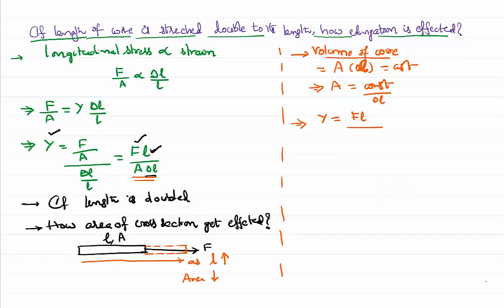Volume is nothing but area into length. So area will be constant by length. Therefore, area is nothing but constant by length. So I will eliminate the area in this equation and write it in terms of the length which is given in the data. So in the place of area, constant by length multiplied by delta L. Rearranging the terms, Young's modulus equal to F into L into L by some constant K delta L. So I can rewrite the terms, delta L as F L square by Y into K.